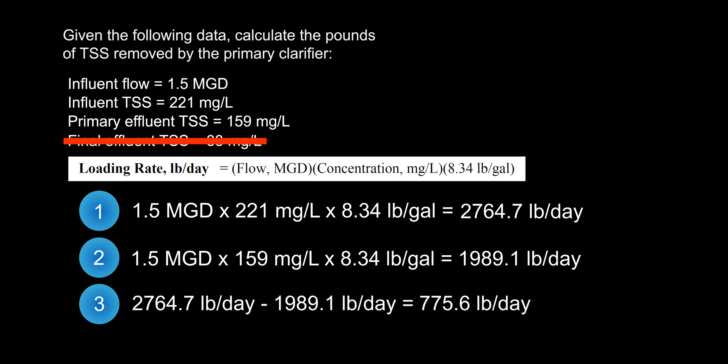This gives us our final answer of 775.6 pounds per day being removed by the primary clarifier, which is answer B. On a side note, we can see this primary clarifier is not performing well, with a removal rate of about 28%. A primary clarifier without additional chemical treatment should be removing at least 40–60% of TSS. This is why performing these tests and equations is vital to troubleshooting a treatment plant.